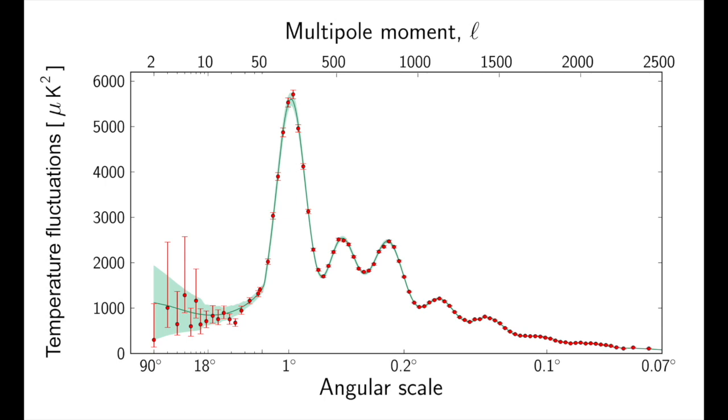You can see that the L values and the corresponding angular scales are shown on the x axis, while the magnitude of the temperature fluctuations is on the y axis. For the CMB, plotting these values creates a very distinctive pattern of peaks and valleys, tapering off at higher L values.